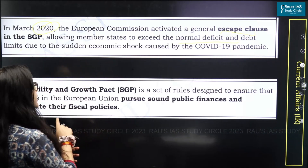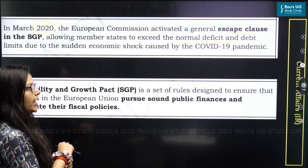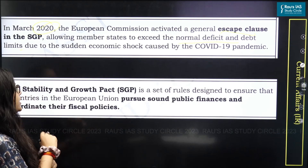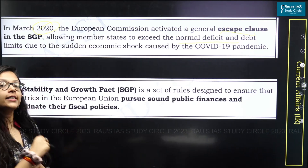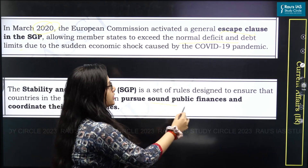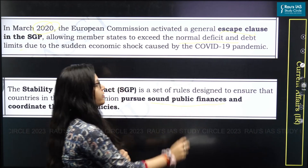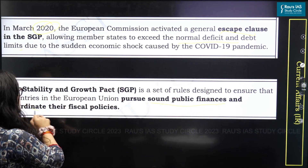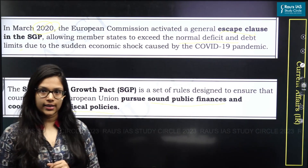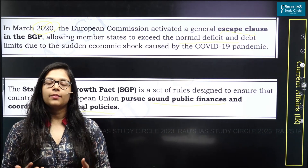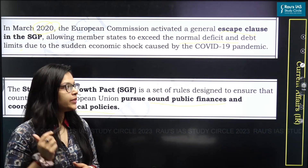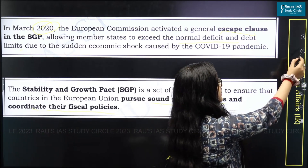Now let us look at exactly what is the Stability and Growth Pact. The Stability and Growth Pact is a set of rules designated to ensure that the countries in the European Union can pursue sound public finances as well as coordinate their fiscal policies. So basically, it is about the economic aspect.